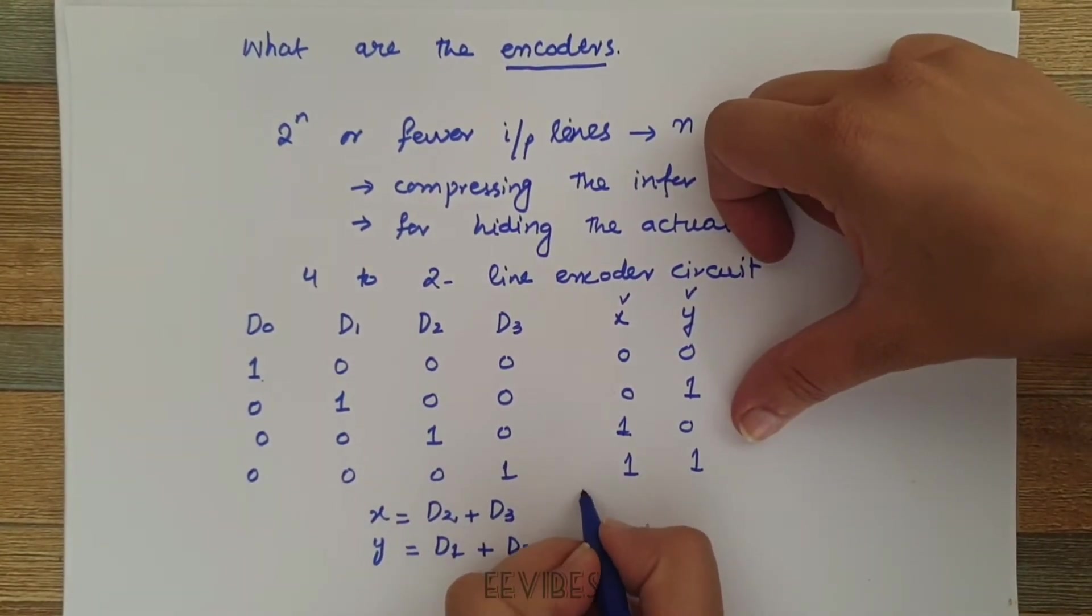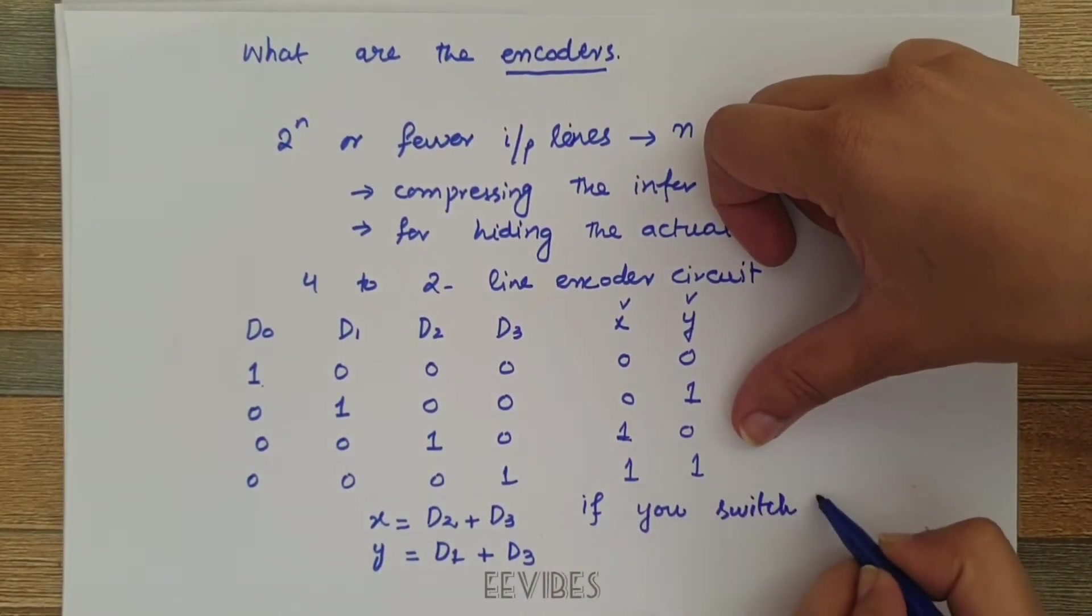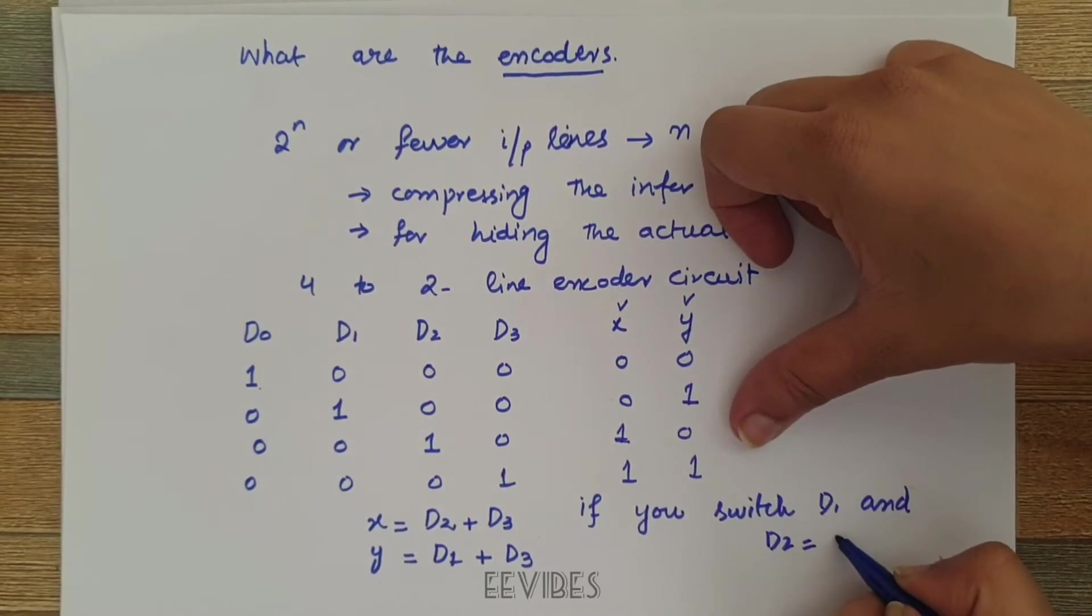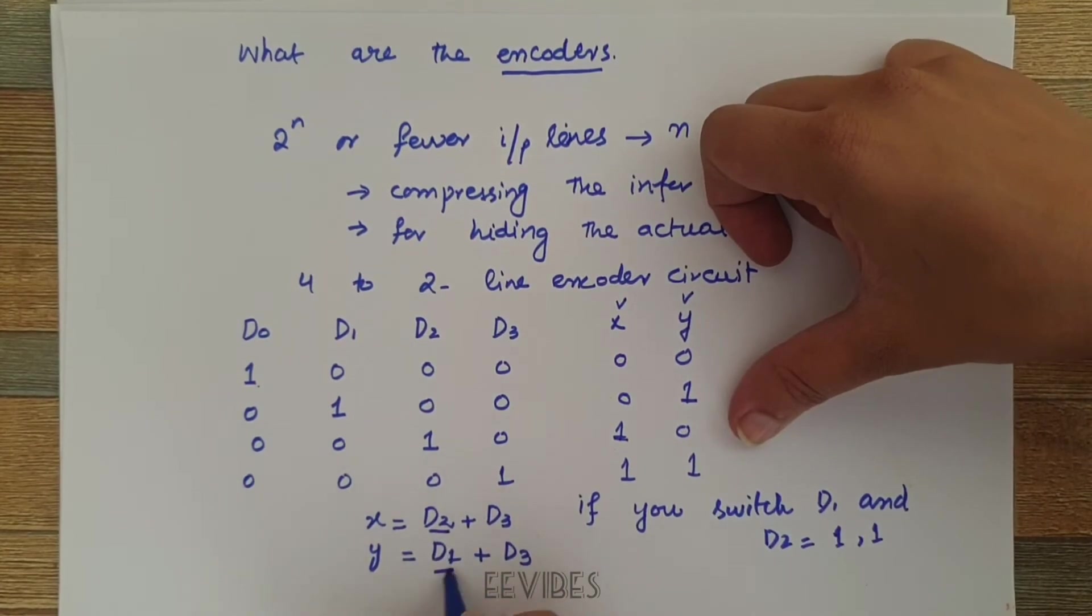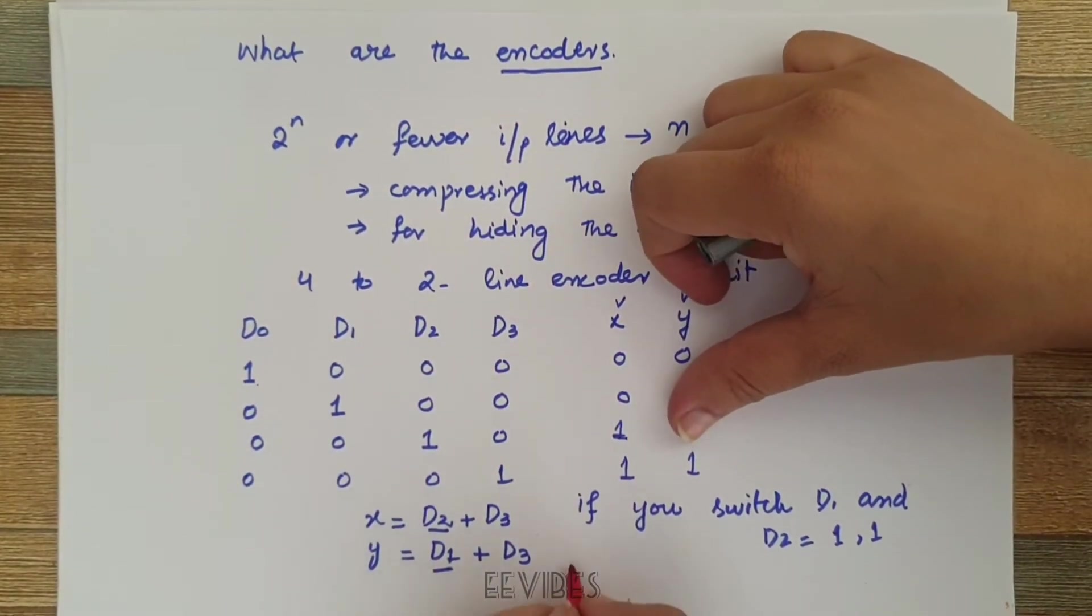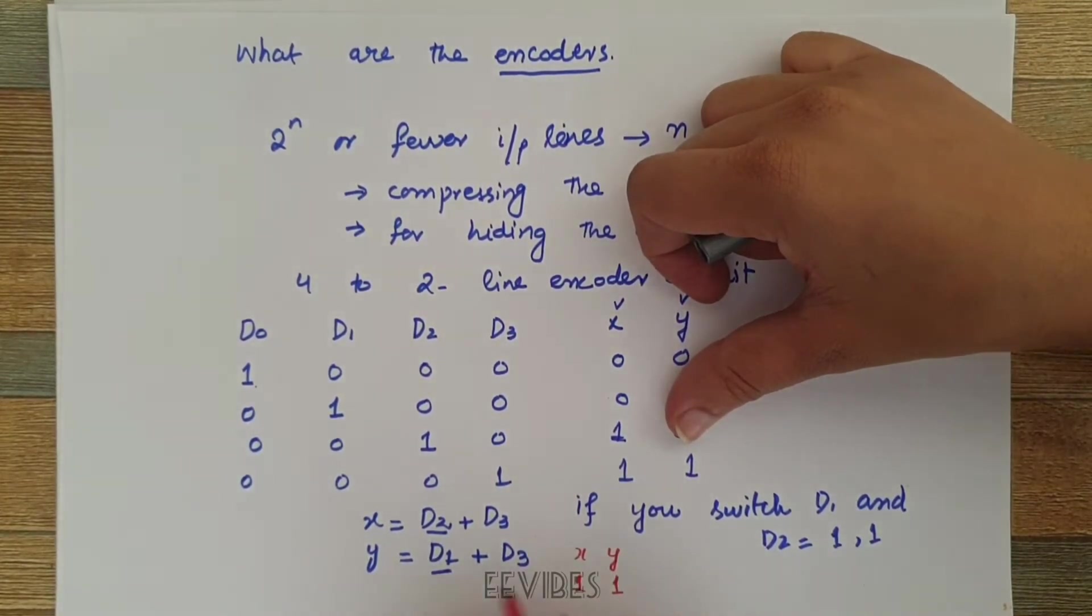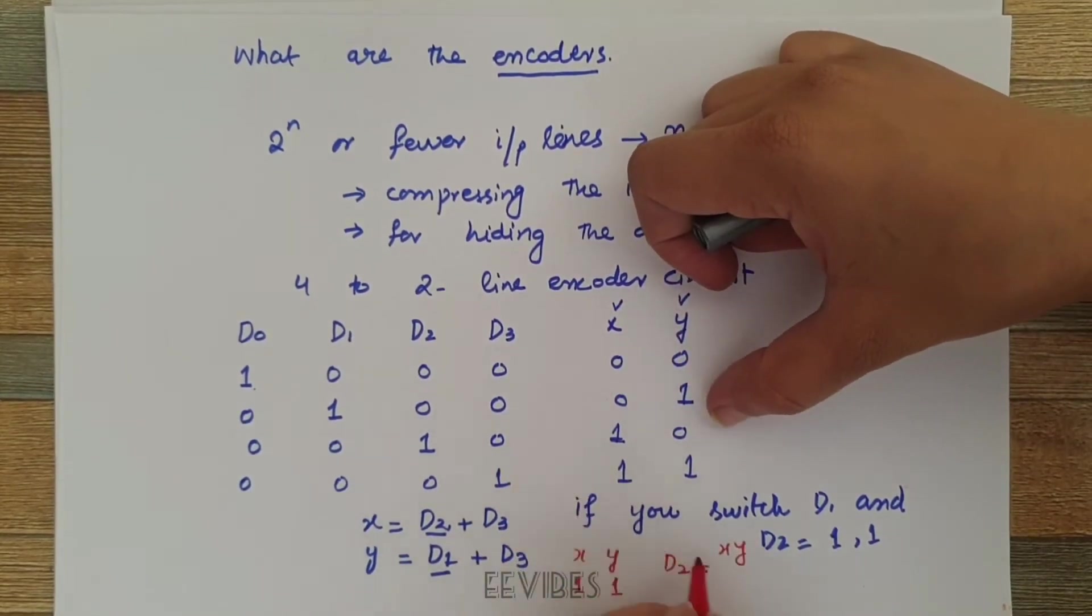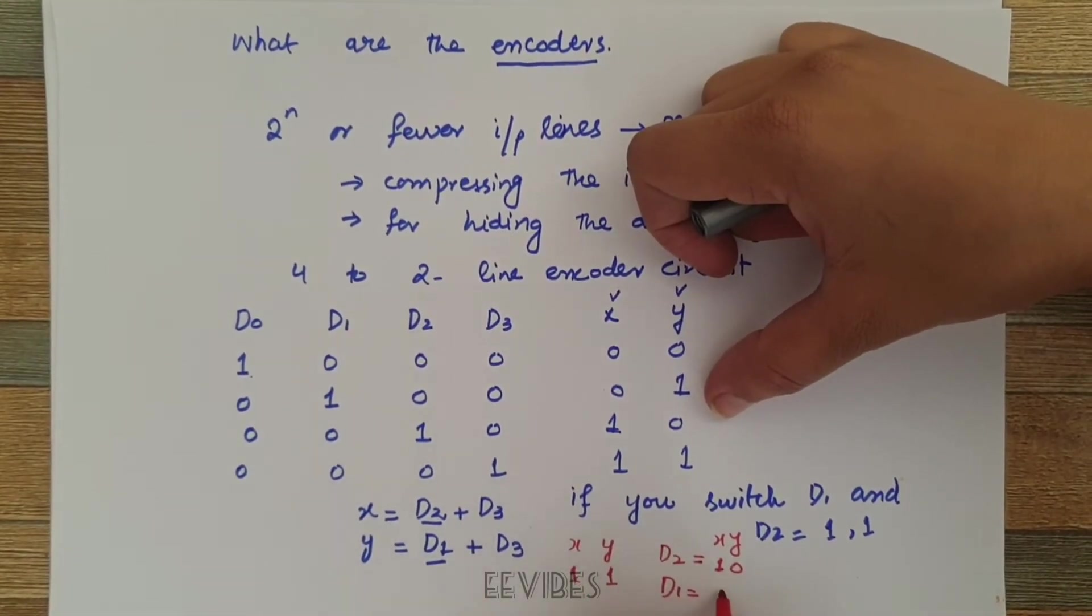Let's say if you switch two input lines at once, let's say D1 and D2 both are switched equal to 1. So when you make D2 equal to 1 and D1 equal to 1, the output value of x and y will be equal to 1, 1, which is neither the combination for D2 (which should be 1, 0) or for D1 (which should be 0, 1).